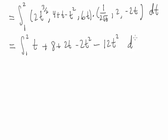So this is the function we're integrating with respect to t. Let's see if we can reduce this down even more. So I really get 8, I have t + 2t which is +3t, and then I have -14t².